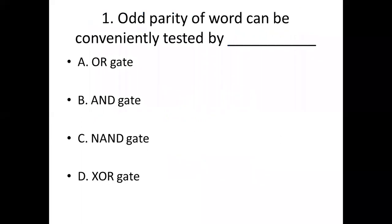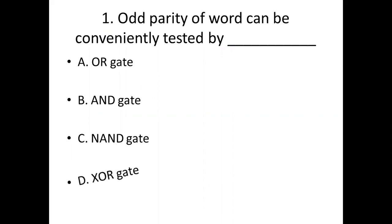First bit: Odd parity of words can be conventionally tested by dash. Option A: OR gate. Option B: AND gate. Option C: NAND gate. Option D: EXOR gate. Answer: Option D, EXOR gate.